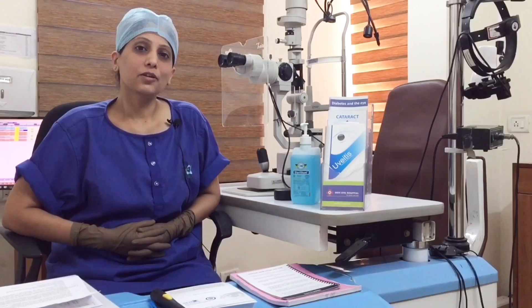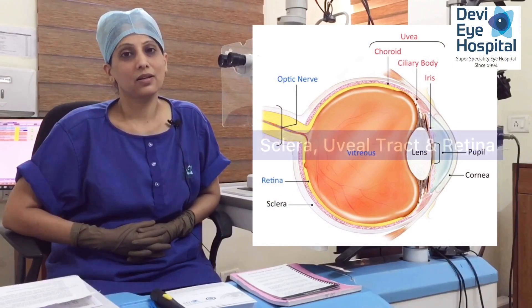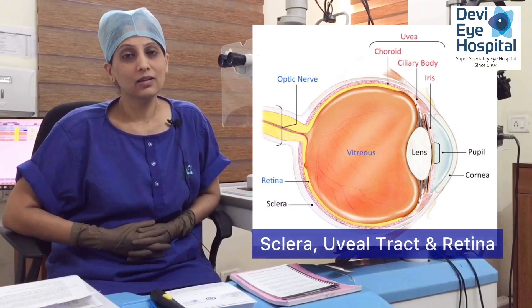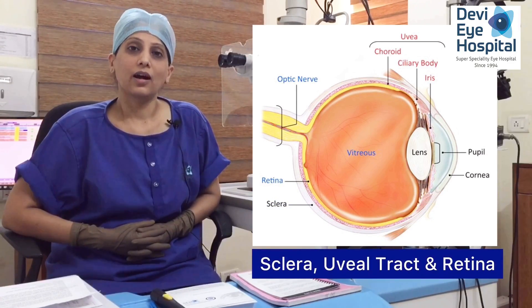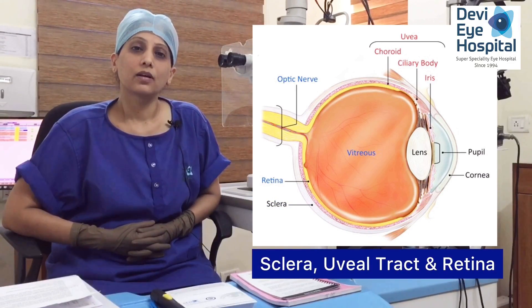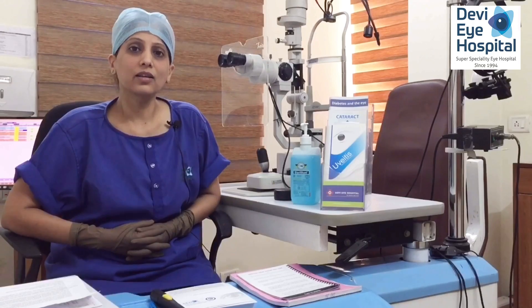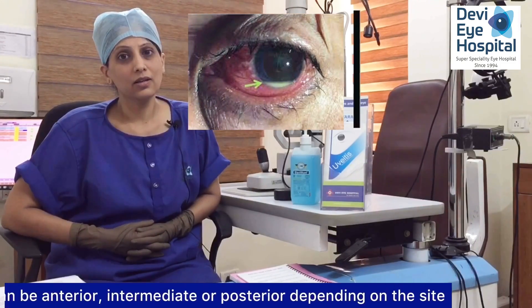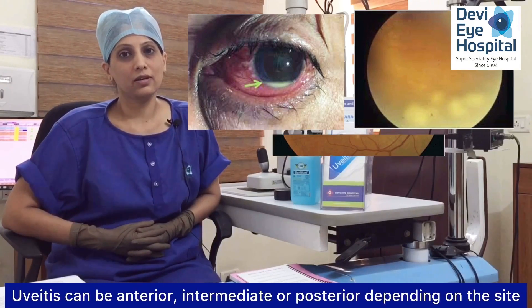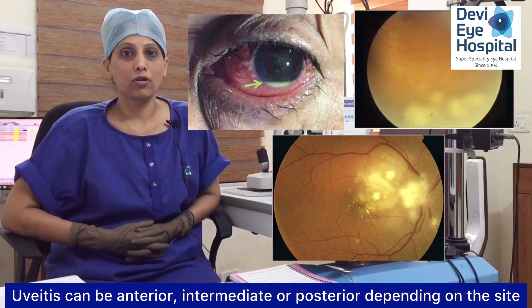The eye, being the most important sense organ, is made up of three layers: the outer white sclera, the middle uveal tract, and the inner retina. The uveal tract is a highly vascular structure, and any inflammation of the tract and the adjacent structures gives rise to a condition technically known as uveitis. Uveitis can be anterior, intermediate, or posterior depending on the site involved.